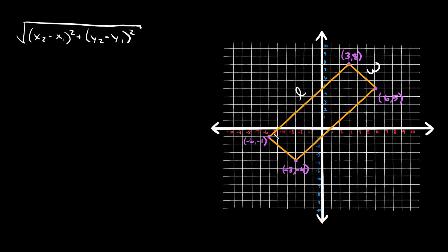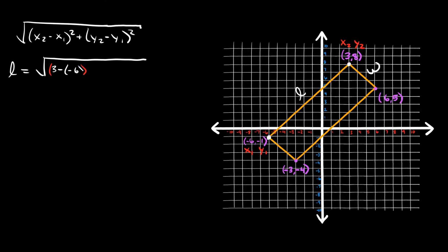So if we want to find this length, we need the distance between the two points: (3, 8) and (−6, −1). We'll label those as (x₁, y₁) and (x₂, y₂). Plugging in: we get the square root of (3 minus negative 6) squared plus (8 minus negative 1) squared. Three minus negative six is the same as three plus six, which equals nine. And eight minus negative one is eight plus one, which also equals nine.